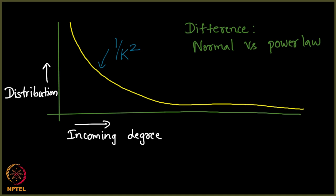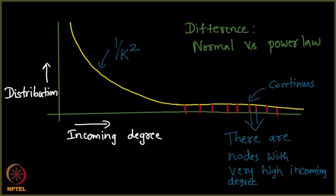So, let me just extend this green line also and what does this signify? What is this band here? What does it denote? Please look at the x and y axis, it is rather self-explanatory. It denotes something very significant. It denotes that this continues, this goes on, goes on means what? It means there are nodes with very high incoming degree.